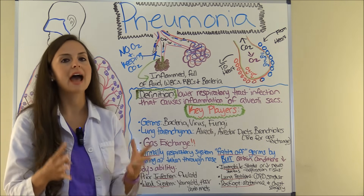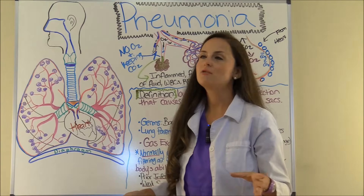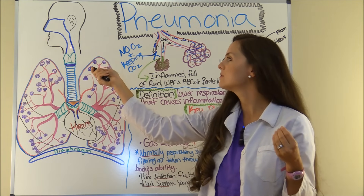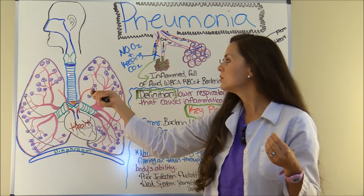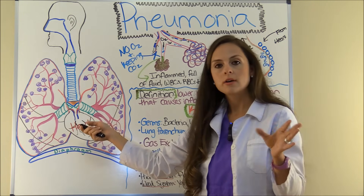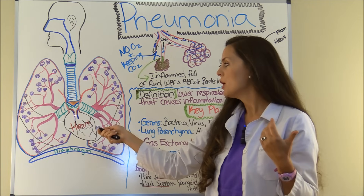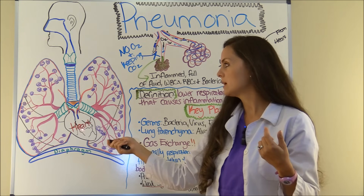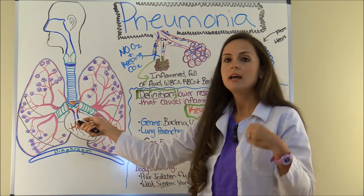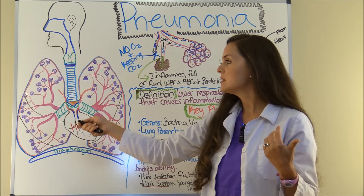Now let's talk about normal gas exchange and compare it to whenever someone has pneumonia. Normal gas exchange occurs when you take oxygen up through your upper respiratory system — through the nose, down through the sinuses, down through the larynx. Then it hits the lower respiratory system, which includes your trachea. The trachea branches off at the carina into your right and left bronchus — your primary bronchi. Then it enters into the lungs at the hilum, where your pulmonary artery and pulmonary vein from the heart also enter. Then it breaks off into secondary bronchi, tertiary bronchi, to the bronchioles, to the alveolar ducts, and into the alveolar sacs.